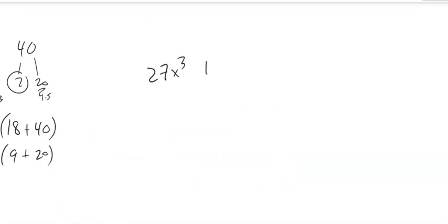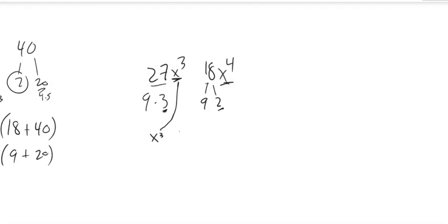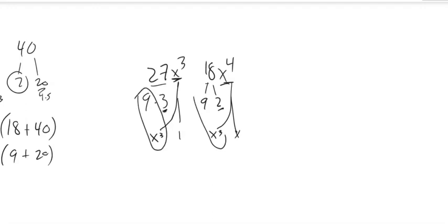So let's think about 27x cubed and 18x to the fourth. If I think about just the numbers 27 and 18, nine goes into both of those. This is nine times three and this is nine times two. The three and the two are relatively prime. And if I look at x cubed and x to the fourth, x cubed has an x cubed in it times one, and x to the fourth also has an x cubed in it — but notice that leaves me an x. So nine x cubed is my greatest common factor. This one is nine x cubed times three, and this one is nine x cubed times two x. The three and two x don't have anything in common, so nine x cubed is my greatest common factor.